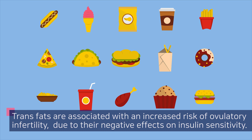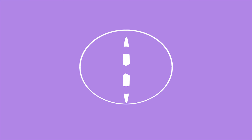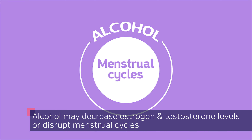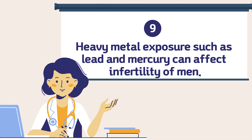Seven: trans fats are associated with an increased risk of ovulatory infertility due to their negative effects on insulin sensitivity. Eight: alcohol may decrease estrogen and testosterone levels or disrupt menstrual cycles.